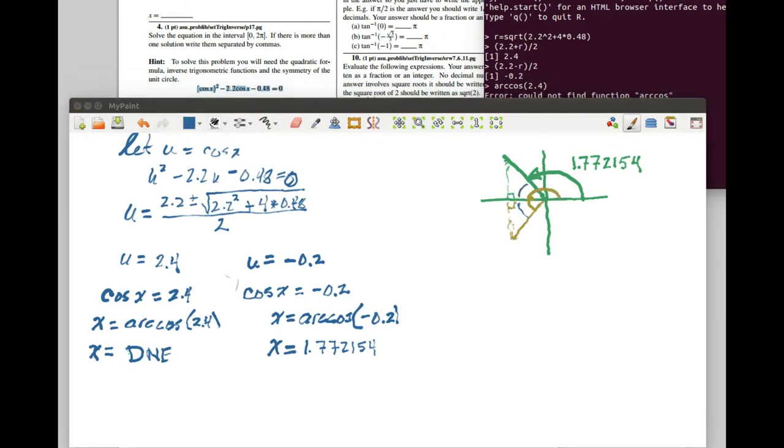Now the problem with the calculator is it only gives you one of the many choices of angles that will give you this result. Notice that the cosine is negative in the second and in the third quadrant. When I asked my computer to tell me what the arc cosine of negative 0.2 was, it told me this first answer, the one that's in the second quadrant.